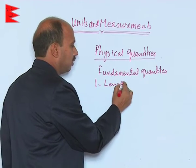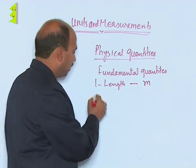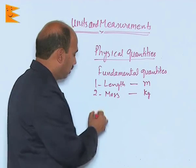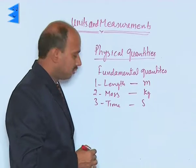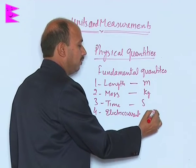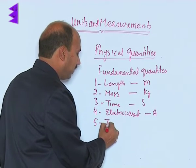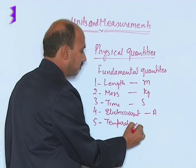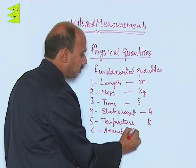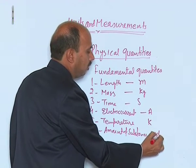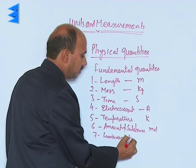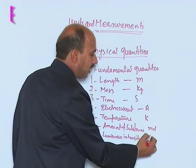The first one is length, measured in meter, symbol m. The second one is mass, measured in kilograms, symbol kg. The third is time, unit is second, symbol s. The fourth one is electric current, measured in ampere, symbol A. The fifth one is temperature, symbol K, which is actually kelvin. The sixth one is amount of substance, written as mole. And the seventh one is luminous intensity, whose unit is candela, written as cd.